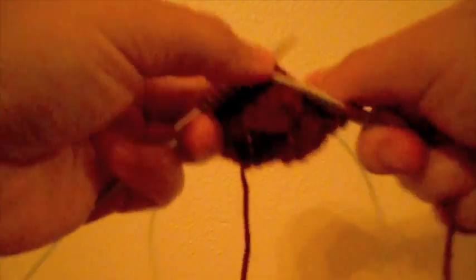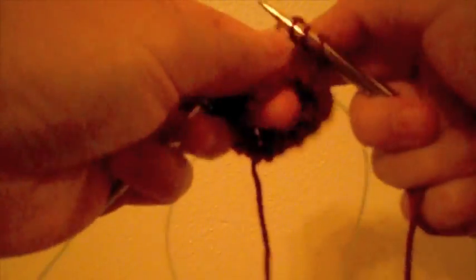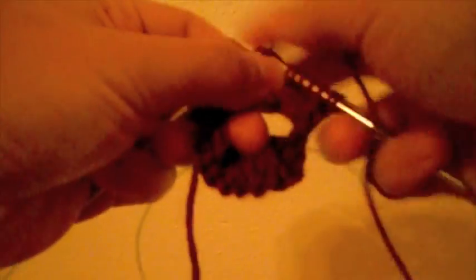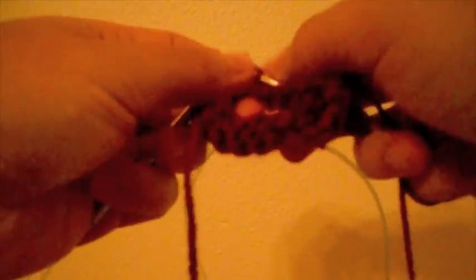Continue in this manner of knitting across each row and then moving the stitches on the cable to the empty needle and the stitches that were just knit onto the cable throughout your pattern.